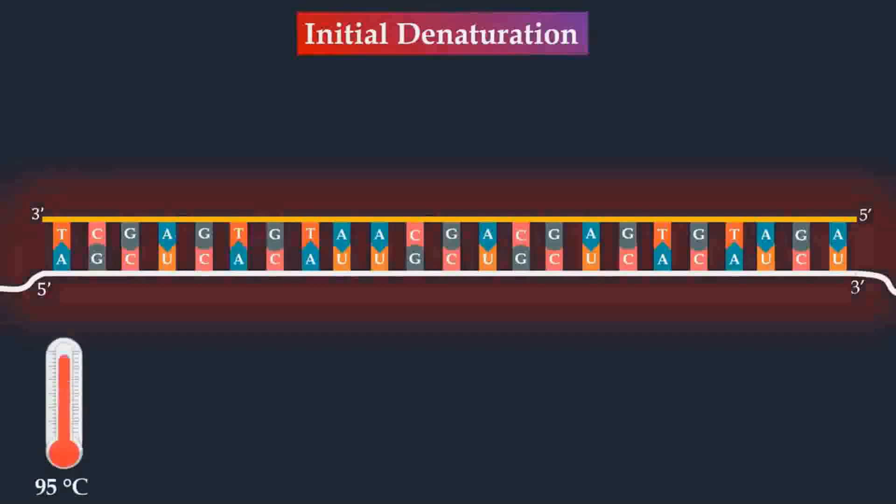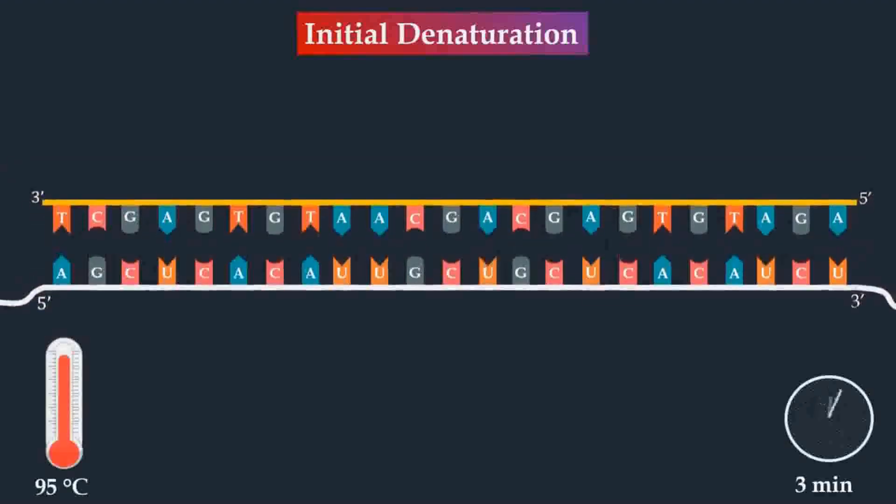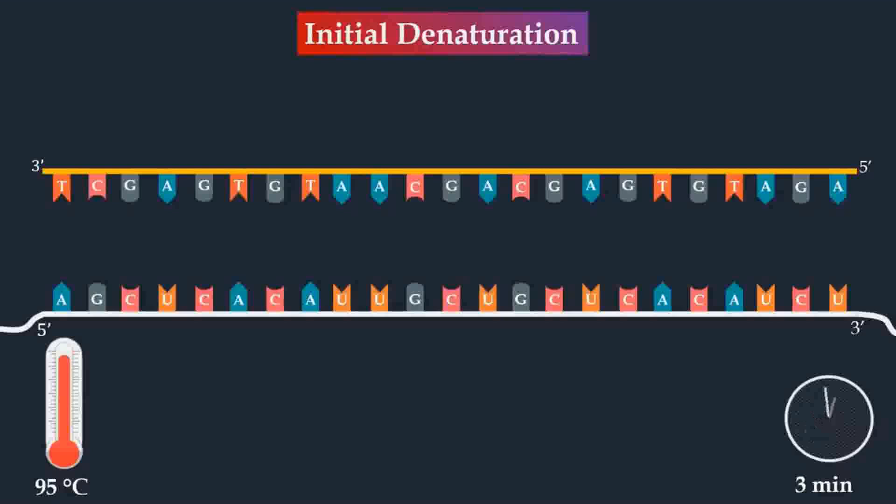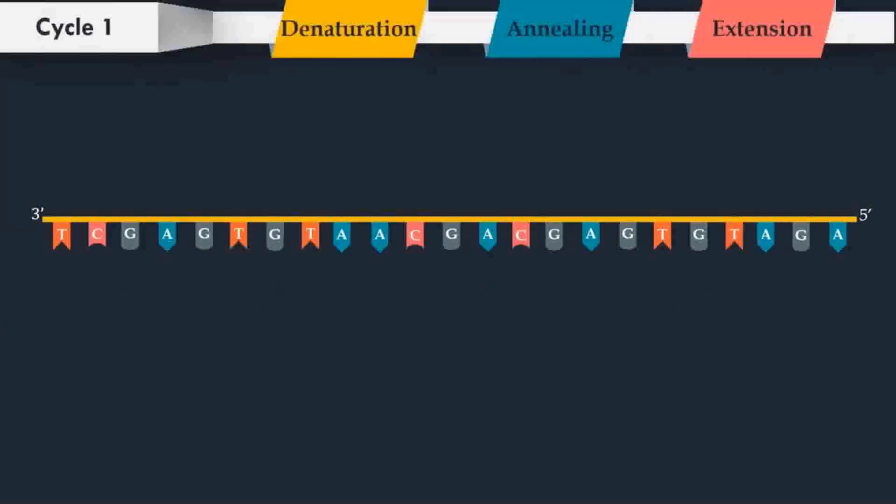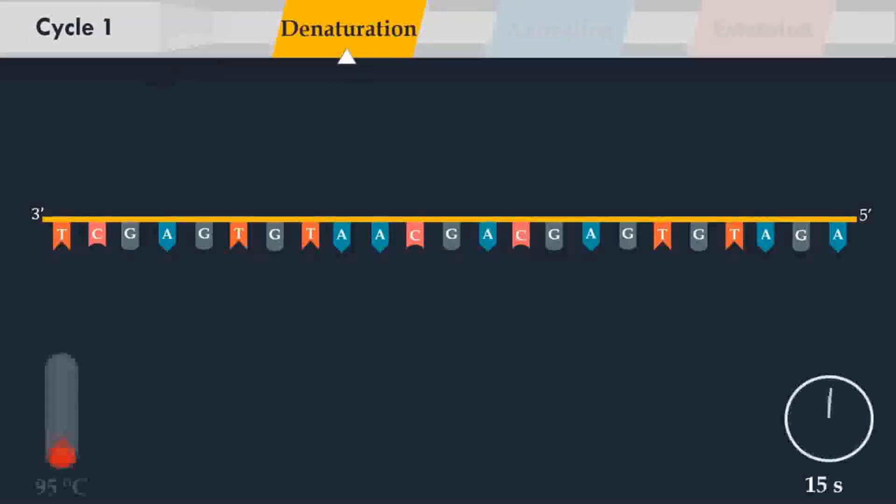Next, an initial denaturation step is applied, causing denaturation of the RNA-DNA hybrids. This step is required for the activation of DNA polymerase and simultaneously the inactivation of reverse transcriptase. PCR consists of a series of thermal cycles, with each cycle consisting of denaturation, annealing, and extension steps.